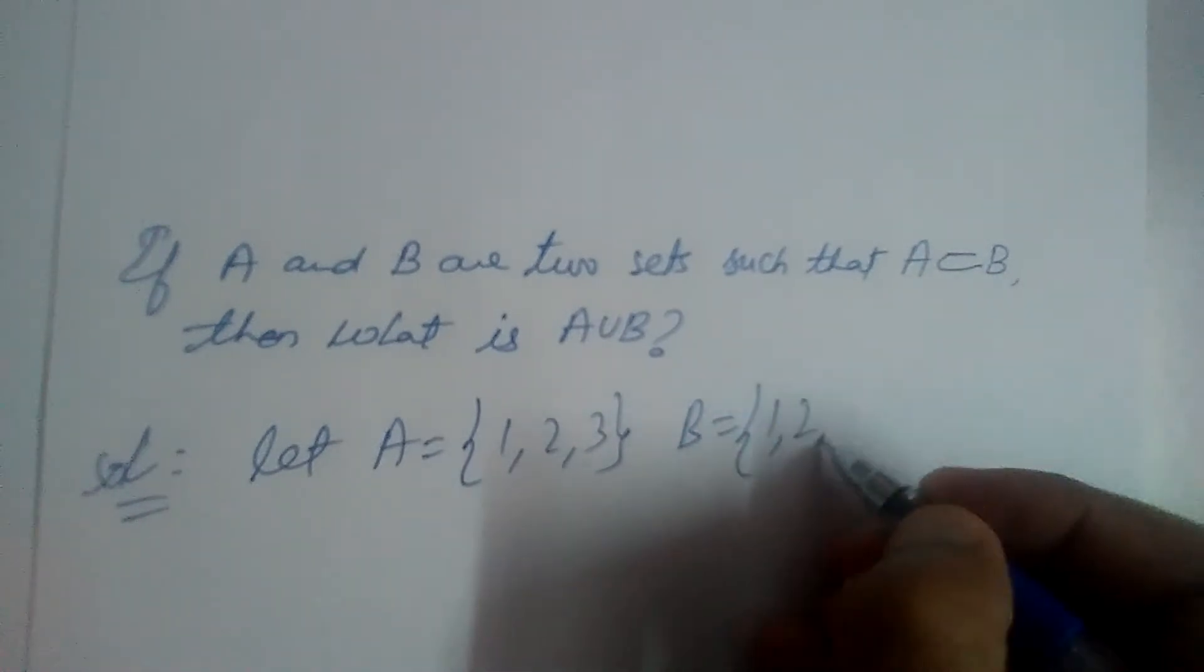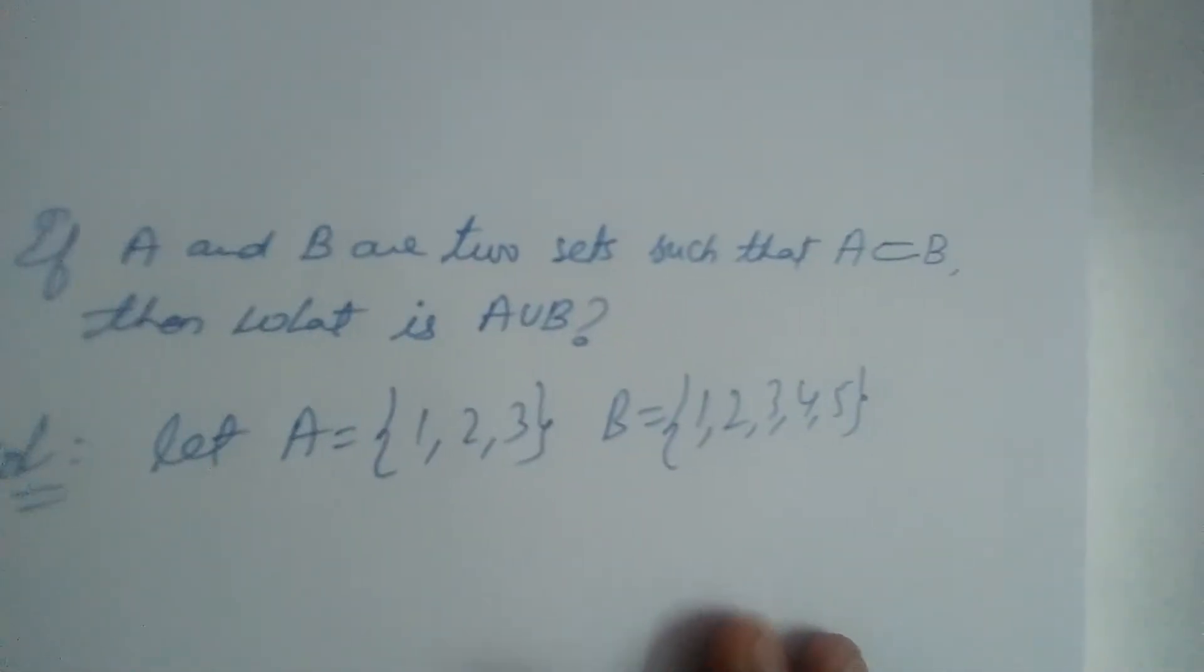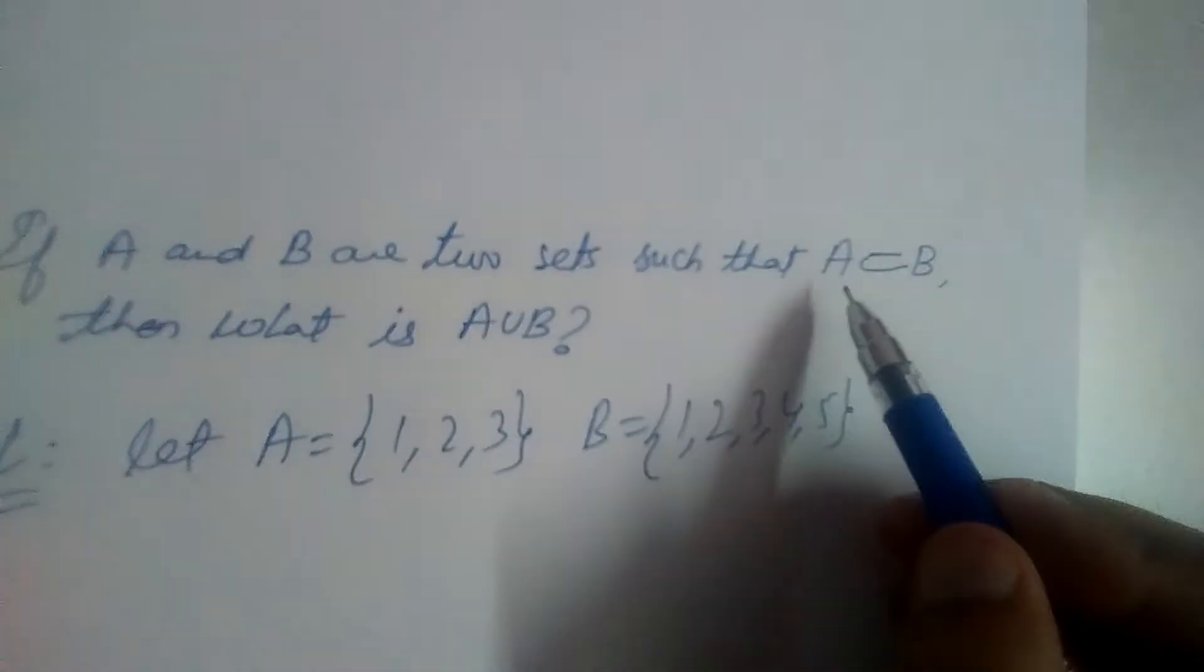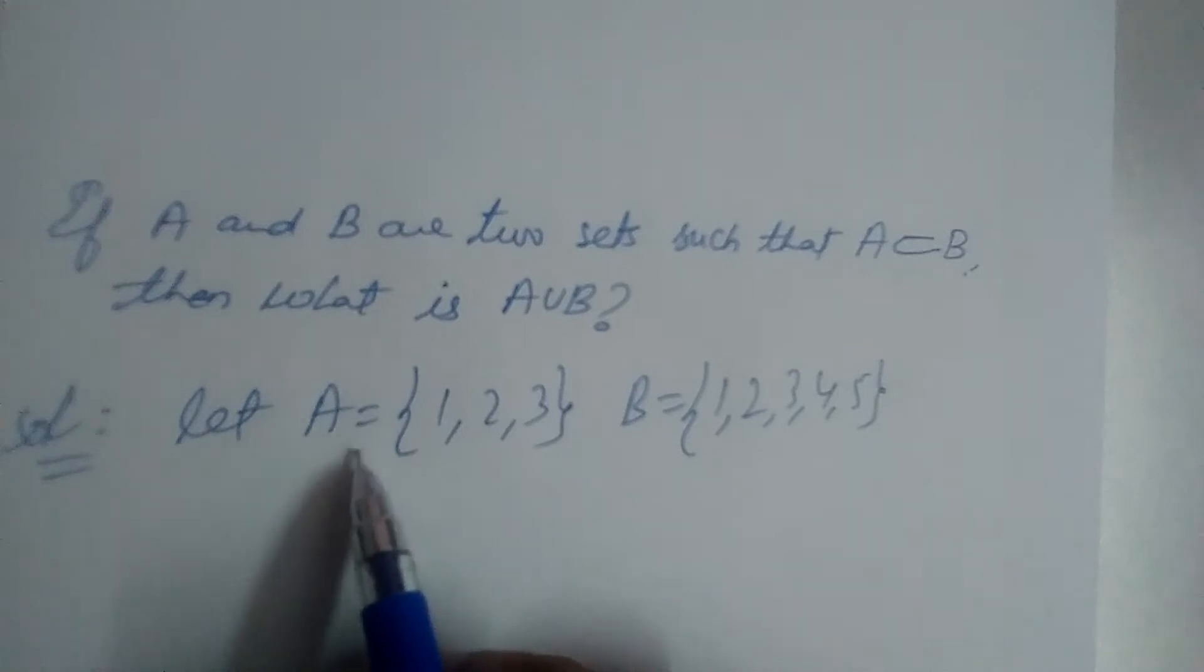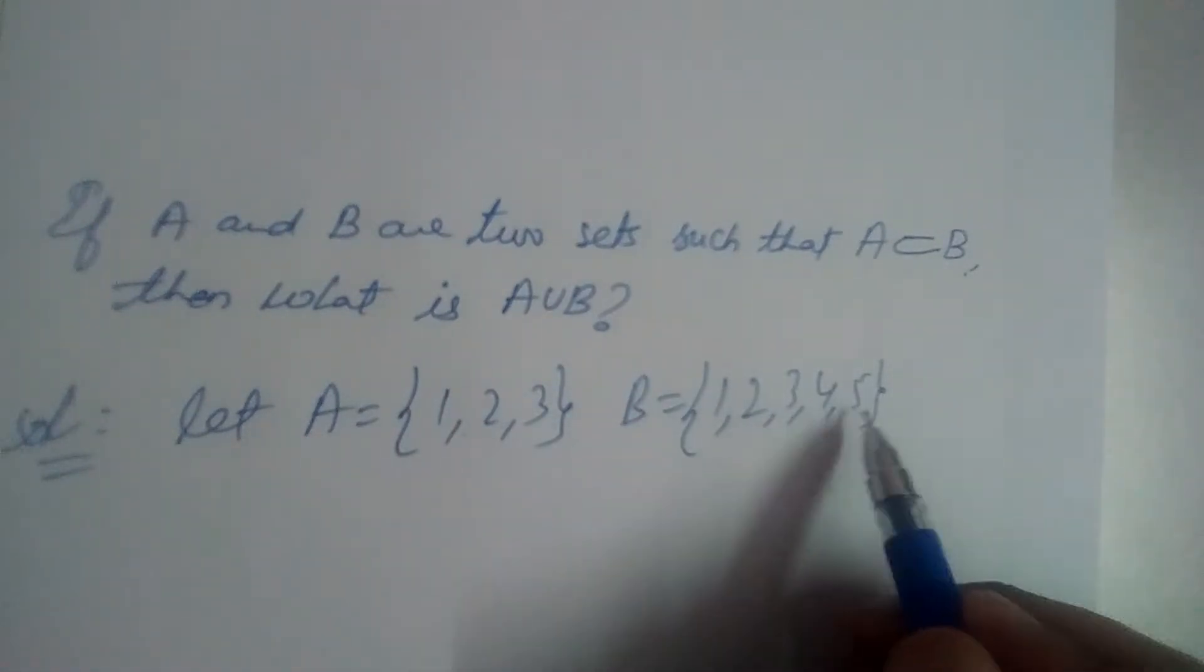B equals {1, 2, 3, 4, 5}. We should take A and B such that A should be a subset of B, right? So here, is A a subset of B? Yes. 1, 2, 3 are in 1, 2, 3, 4, 5, so A is a subset of B.